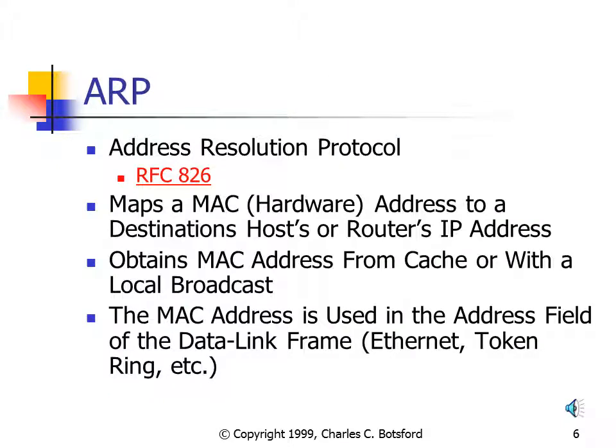ARP. The job of the Address Resolution Protocol is to map a MAC or hardware address to the destination host or router's IP address. A MAC or hardware address — sometimes called a physical address — is a unique six-byte address in most cases, burned into the network interface card by the manufacturer. Every NIC card should have a unique hardware address. The source computer will retrieve the appropriate MAC address either from cache or from a broadcast, and once it has the appropriate MAC address, it places that MAC address in the destination address field of the Ethernet frame or token ring frame.